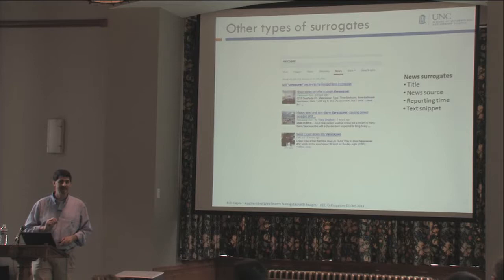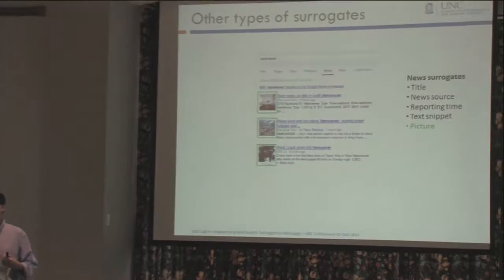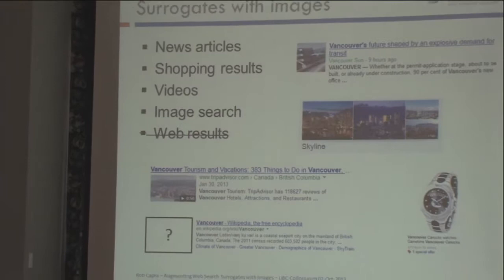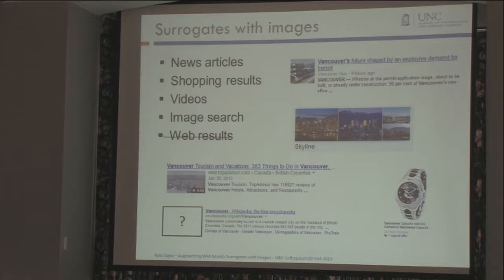There are images for news stories but not for web results. News stories tend to have images that go with them, and that picture can help you understand something about the context of the story — it helps convey additional information for the surrogate. There are also surrogates for shopping results, for videos, for images. If I do an image search, I get images as part of that surrogate. All these different surrogates have images, but web result surrogates tend not to. We thought that was kind of weird.